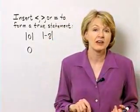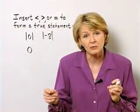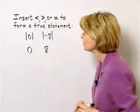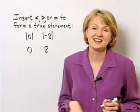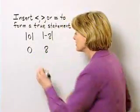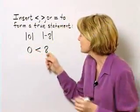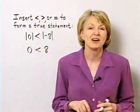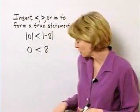What is the absolute value of negative eight? It's that number's distance from zero on a number line, and that distance is eight units. So to compare these two, how do zero and eight compare? Zero is less than eight. Since zero is less than eight, the absolute value of zero is less than the absolute value of negative eight, and we have formed a true statement.